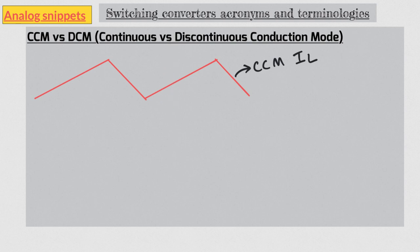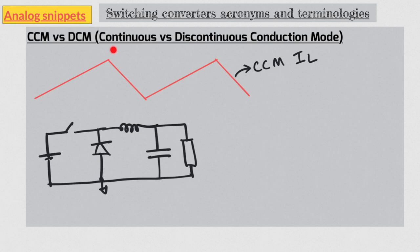Now let's consider an asynchronous buck converter and consider what happens at very low load currents. As this waveform comes down with reducing load, there comes a point when the valley or the lowest point of this waveform becomes zero. What would happen if we reduce the load further? If we continue to go with the same slope, the current wants to go negative, but the diode being a diode cannot conduct negative currents. So inductor current becomes zero in this duration, and this is known as discontinuous conduction mode or DCM.